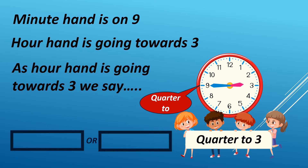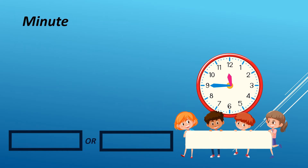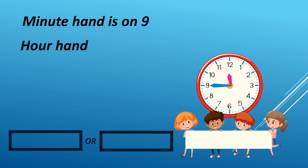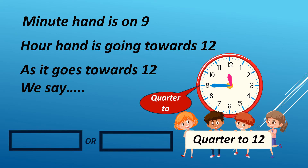It can either be AM or PM. For example, it is 2:45 AM in 12-hour format. We read it as 245 hours in 24-hour format. When the minute hand is on 9 and the hour hand is going towards 12, we say quarter to 12.